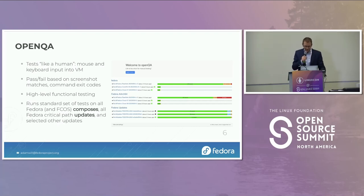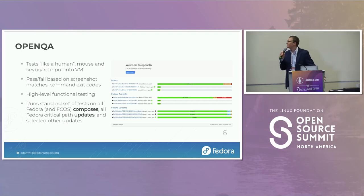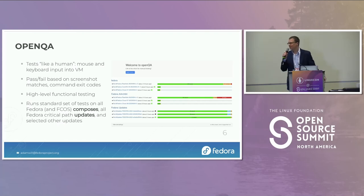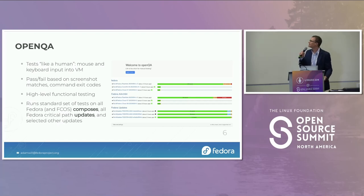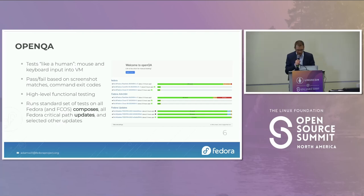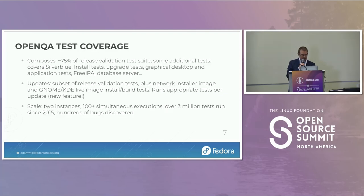The weakness of OpenQA is that it isn't a traditional automated test framework. You can make it be one but it's ugly and very inefficient because it's always spinning up virtual machines and it's slow. If all you want to do is run a program and check its output, you wouldn't use OpenQA for that.